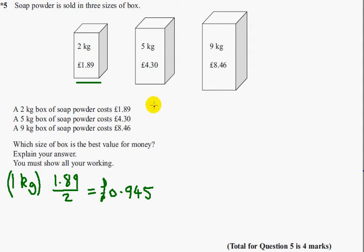Now for the second box, 5kg for £4.30, I'm going to once again work out how much 1kg costs. So £4.30 divided by 5 is £0.86.